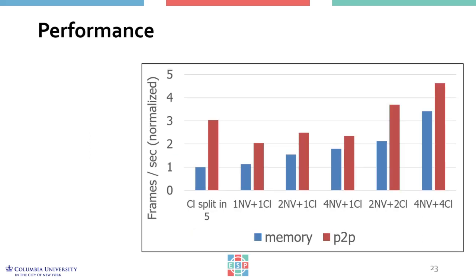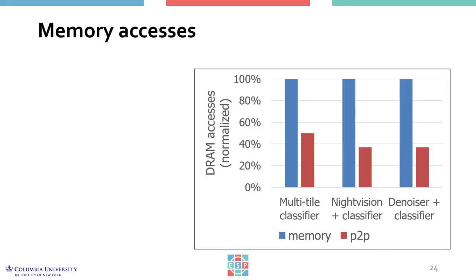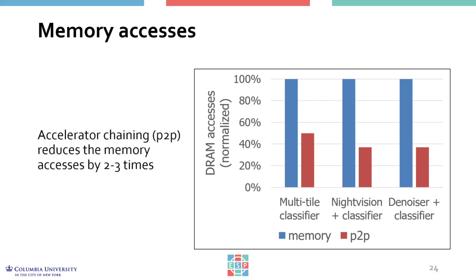Looking at throughput in frames per second for six applications — the classifier partitioned in five accelerators and variants of night vision plus classifier with varying parallelism — we see that both parallelization and point-to-point communication between accelerators have a positive impact on execution time, with an improvement of up to 4.5x. An additional important result is the reduction in memory accesses due to point-to-point communication between accelerators, compared to the model where accelerators communicate through shared memory only. This reduction in memory accesses translates to significant energy savings, ranging between 2x and 3x for the applications used in this evaluation.